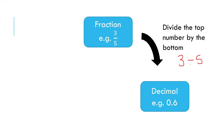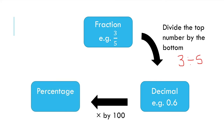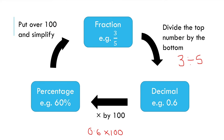If I want to go from a decimal to a percentage, I need to multiply by 100. So in this case, I'll be taking 0.6 and multiplying by 100, which gives me 60%. If I want to get from a percentage back to a fraction, I put that percentage over 100 and simplify. So 60 over 100, because that's what percent means — per 100. And if I divide top and bottom by 20, I get back to 3 over 5.